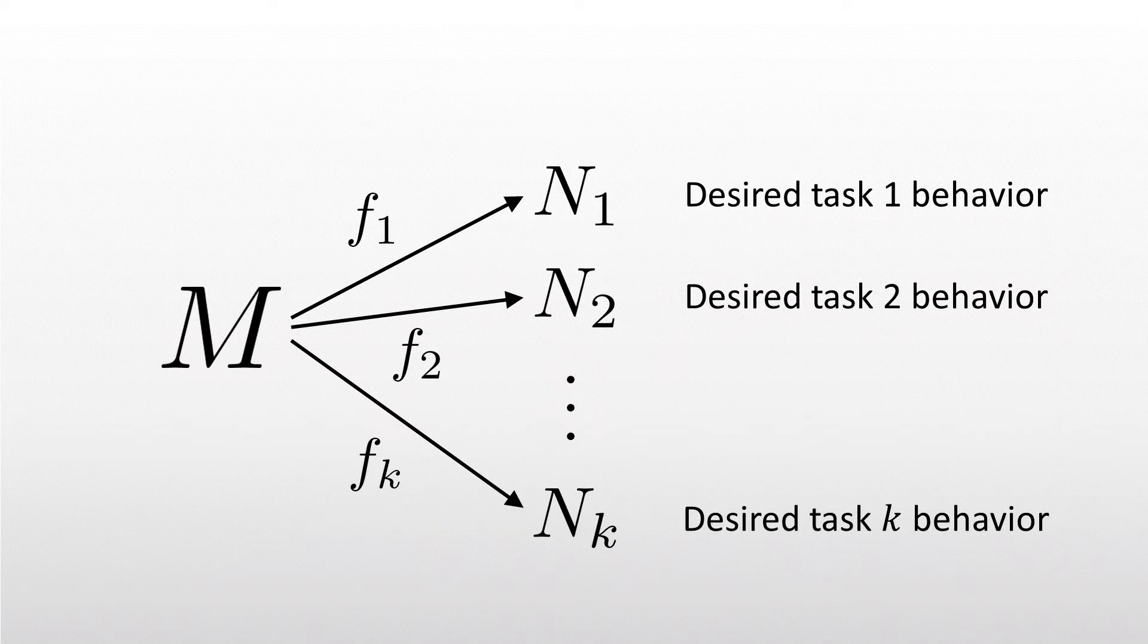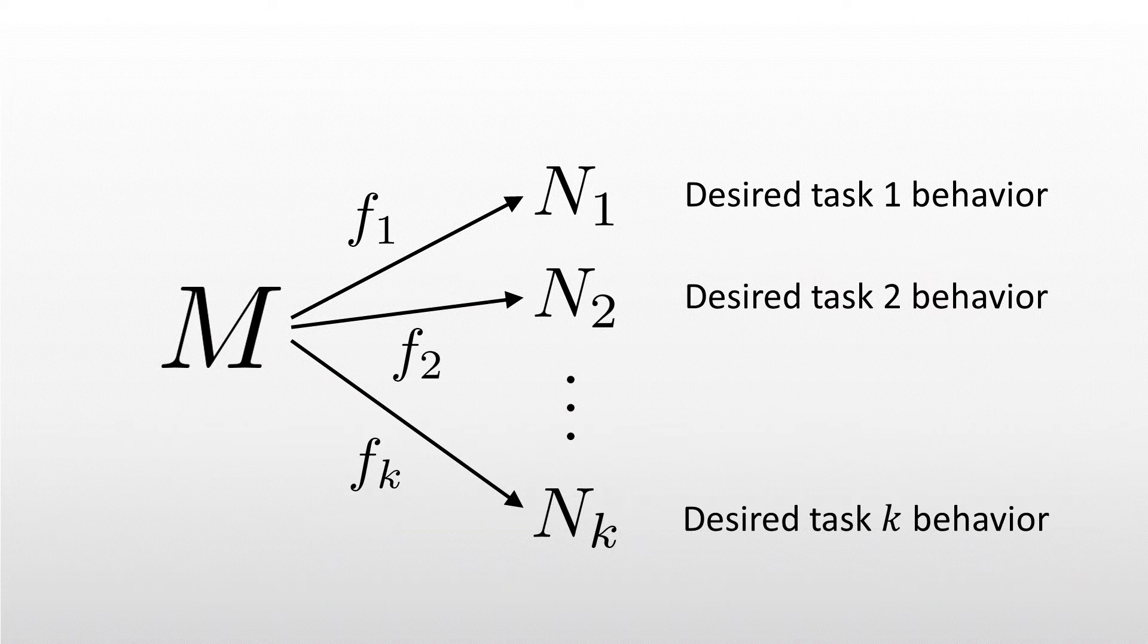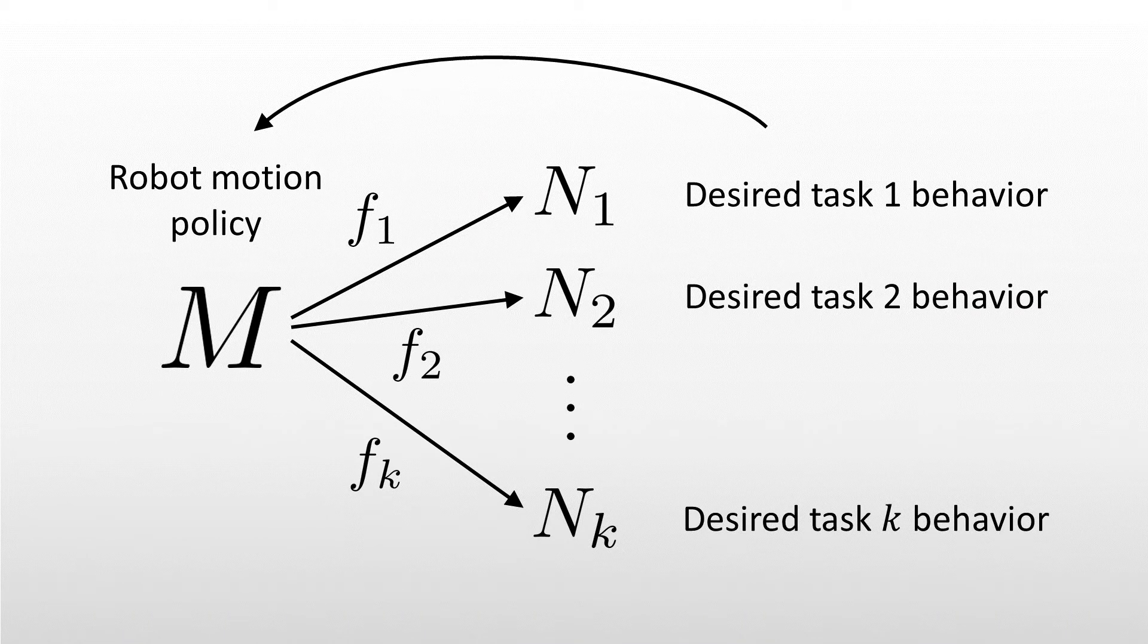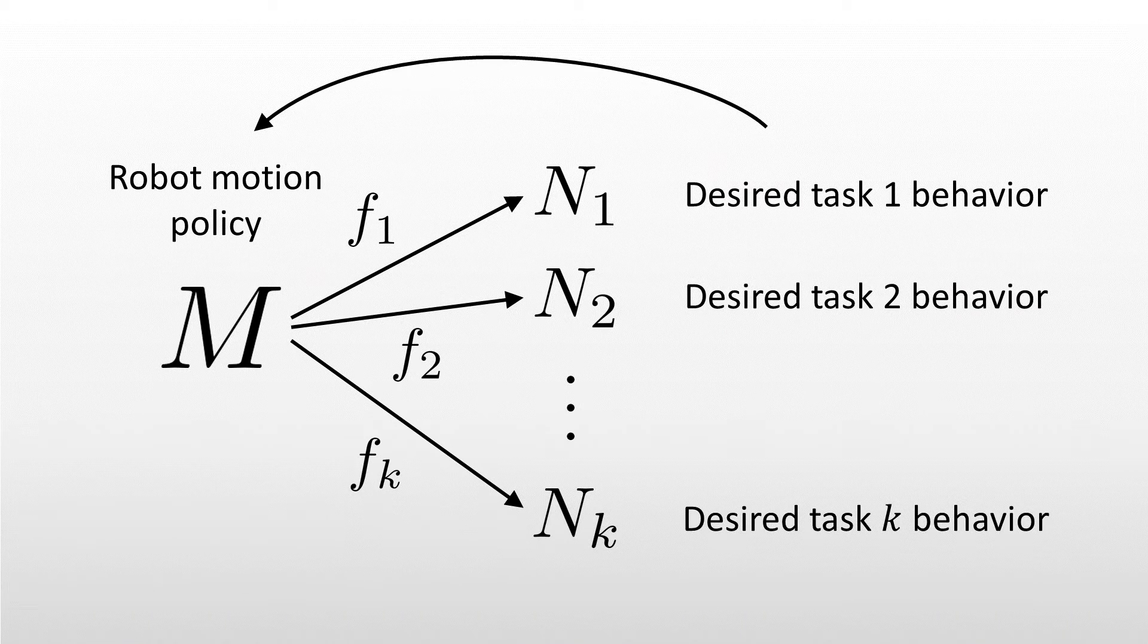Then, given multiple tasks with different task behaviors, we can use a geometric optimization problem to extract a robot motion policy that strikes a weighted balance between the desired task behaviors.